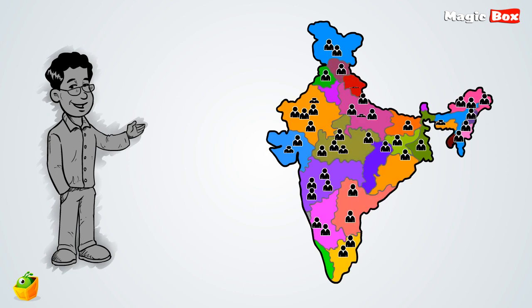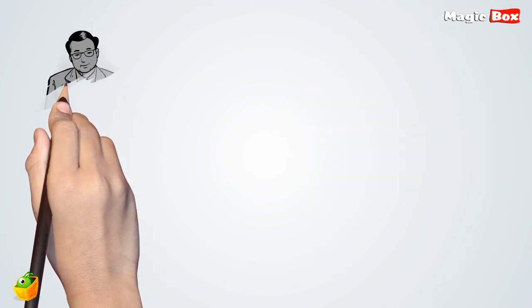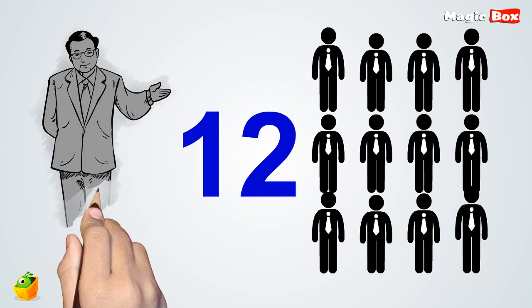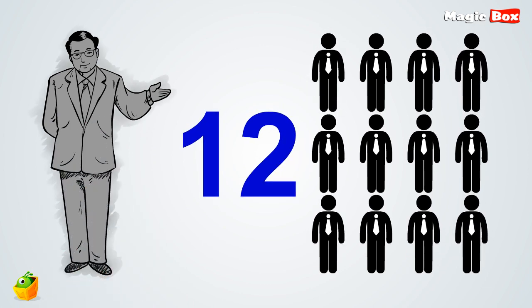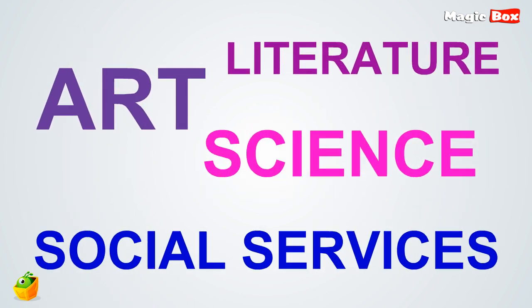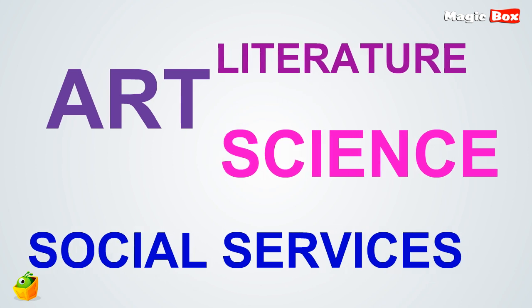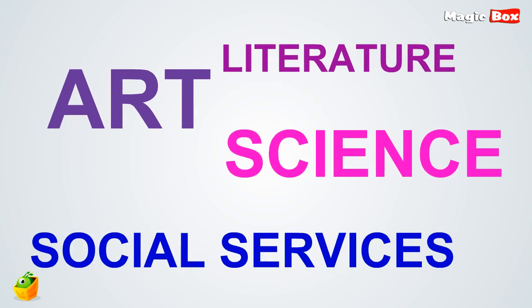Every state is allotted a certain number of members, 12 of whom are chosen by the President for their expertise in specific fields of art, literature, science and social services.